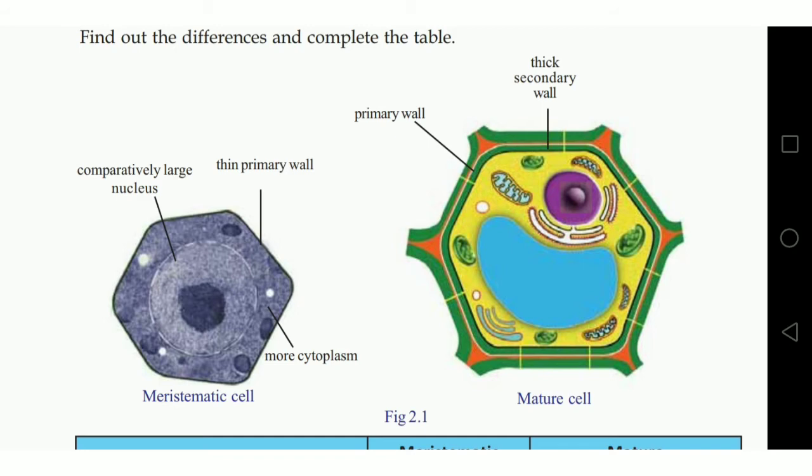Cell wall is thin in meristematic cell and thick in mature cell.